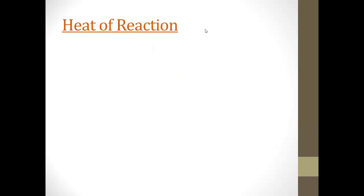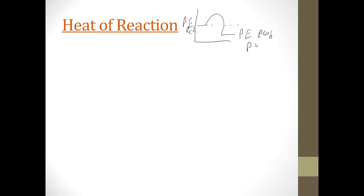Let's go back to heat of reaction. It's the difference between the potential energy of the products and the potential energy of the reactants — energy of products minus energy of reactants. When it's negative, it's exothermic. When it's positive, it's endothermic.